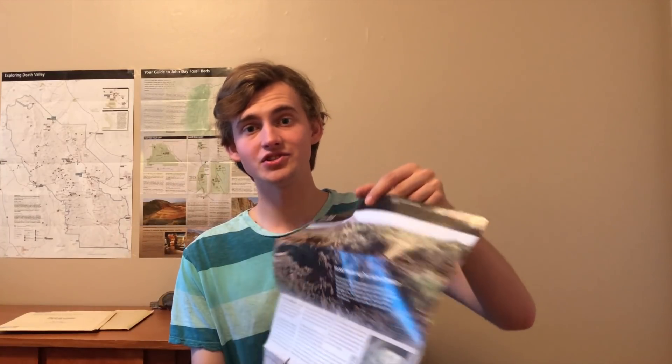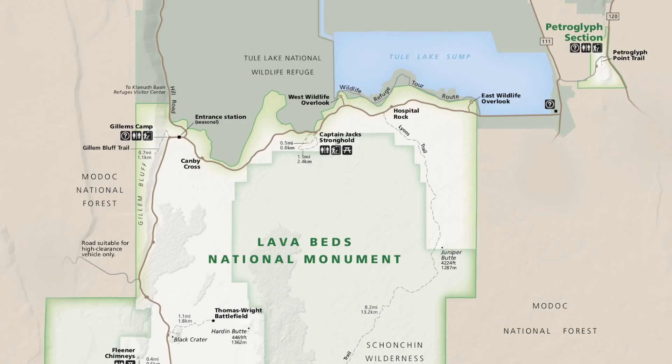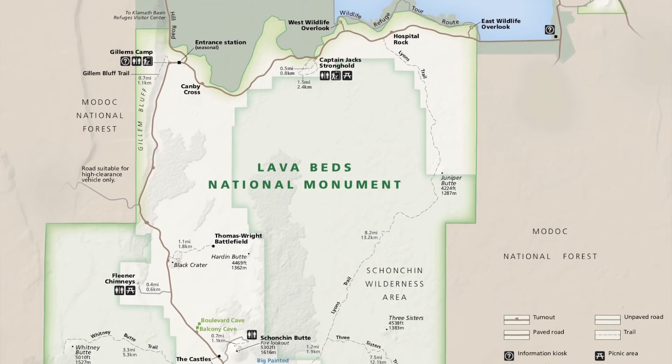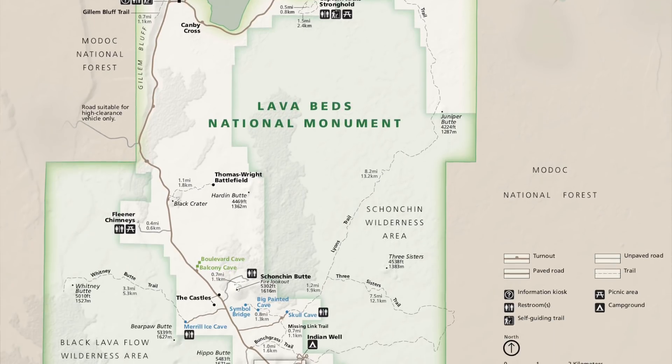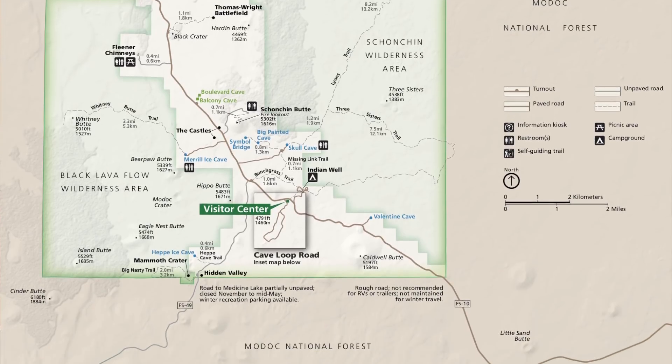National park units in the United States have a standard type of map. This is the map for Lava Beds National Monument in far northern California, and it's a very good example of a tourist map. As you can see, it's very easy to read and has lots of information on both sides. Tourist maps like this usually only show roads, trails, and important places to go such as campgrounds or points of interest.